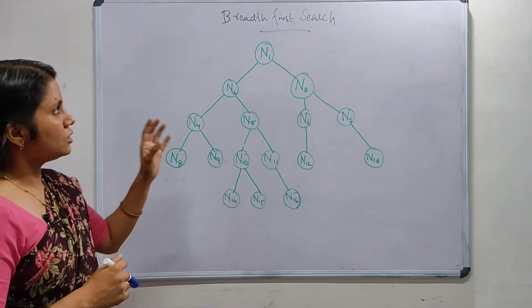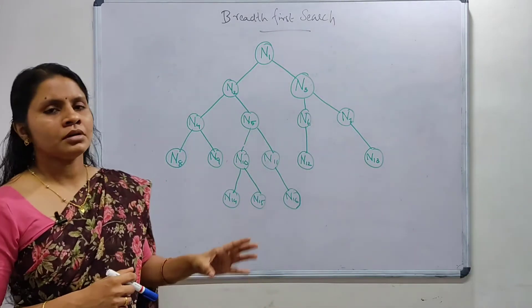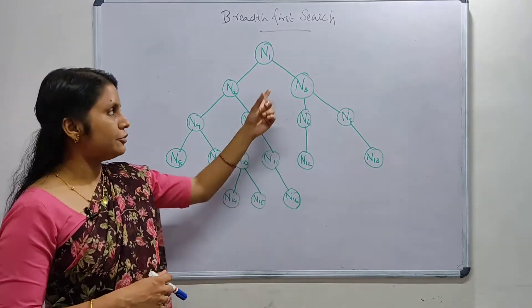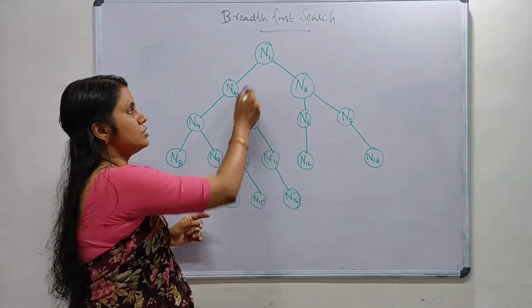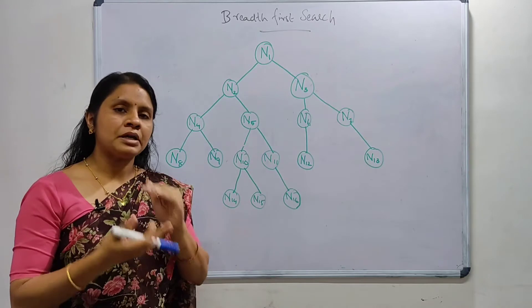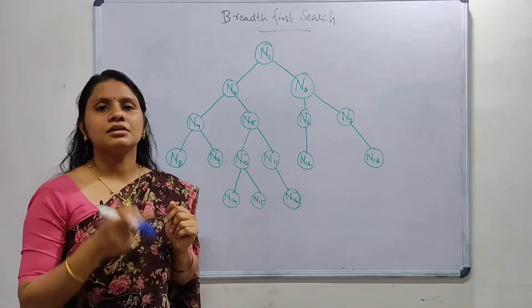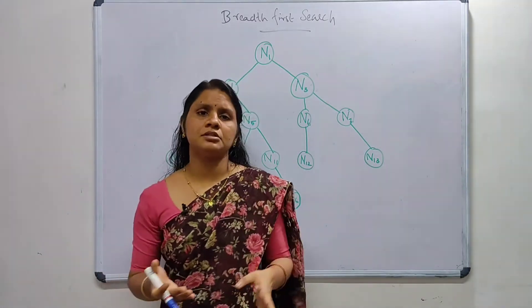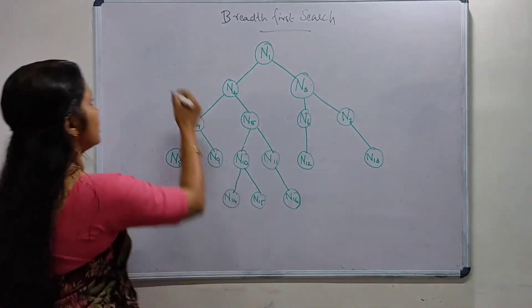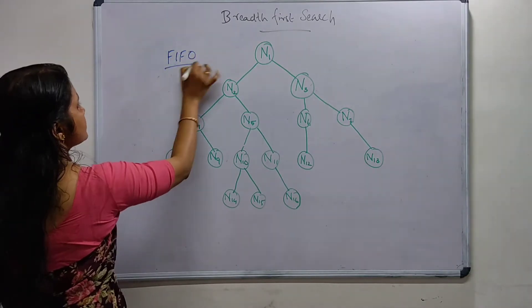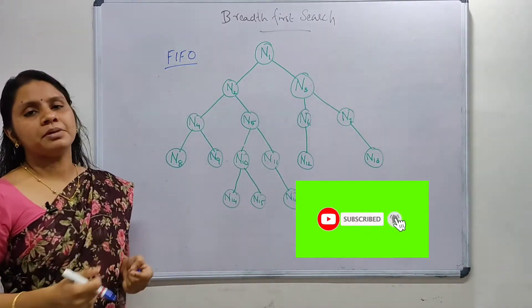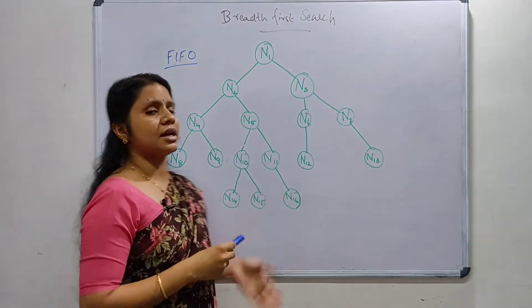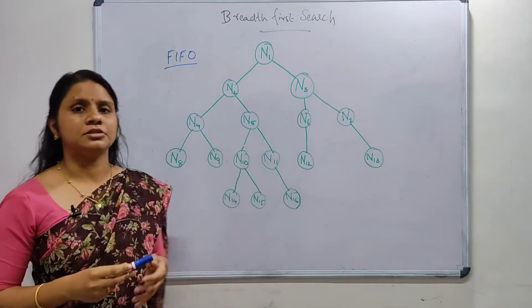In breadth-first search, the algorithm starts from the root node. The root node's successors are expanded, and this process is repeated until the last successor is involved. The data structure most preferable to implement breadth-first search is FIFO — first in, first out.